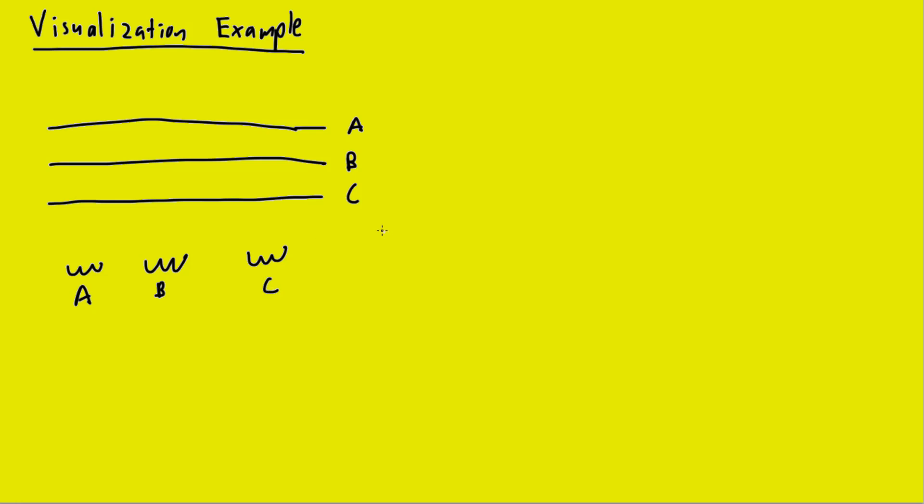Let's consider one side of a transformer configuration. Let's just call it primary in this case. Here are the three lines bringing in power to the transformer. These are the three single-phase inductors that make up the transformer. How are these inductors connected to the incoming lines? Well, we need to ask ourselves, what is the connection? Let's say for our first example here, we're going to call it a delta connection.